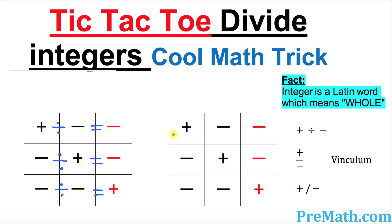Sometimes people use instead of the division sign, an oblique or slash division sign. So positive divided by negative is going to give you a negative. Negative divided by positive is going to give you negative. And finally negative divided by negative is going to give you positive. Those are the really simple building blocks that are very crucial when it comes to dividing integers.